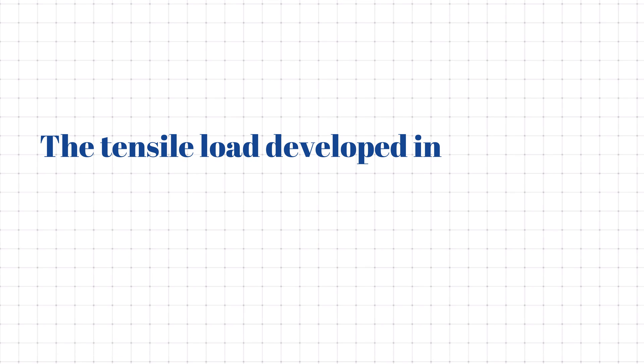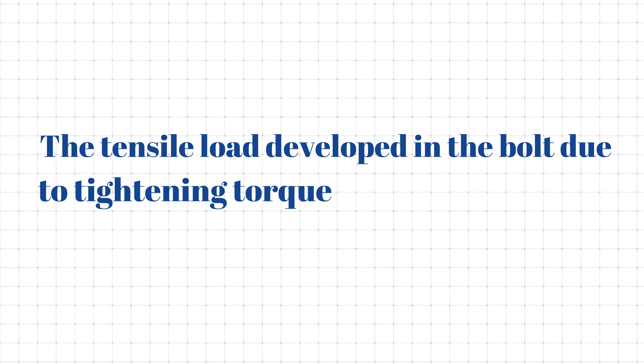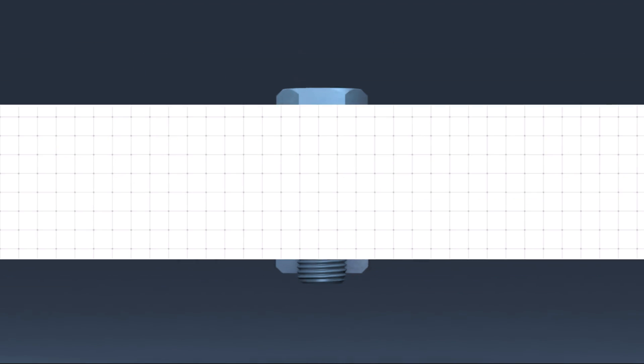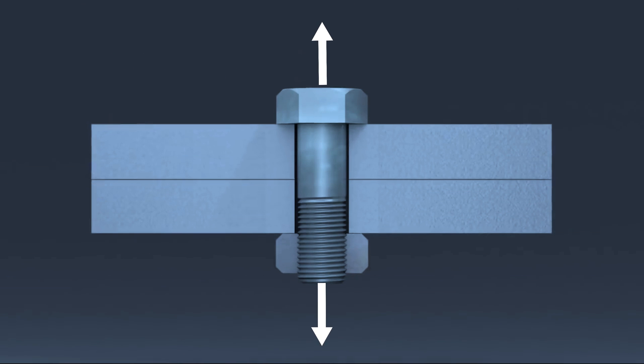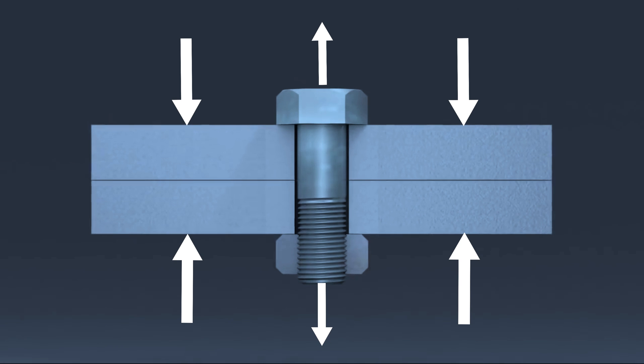The tensile load developed in the bolt due to tightening torque is known as preload. The tensile load in the bolt creates a compressive force in the bolted joint which is often known as clamping force.